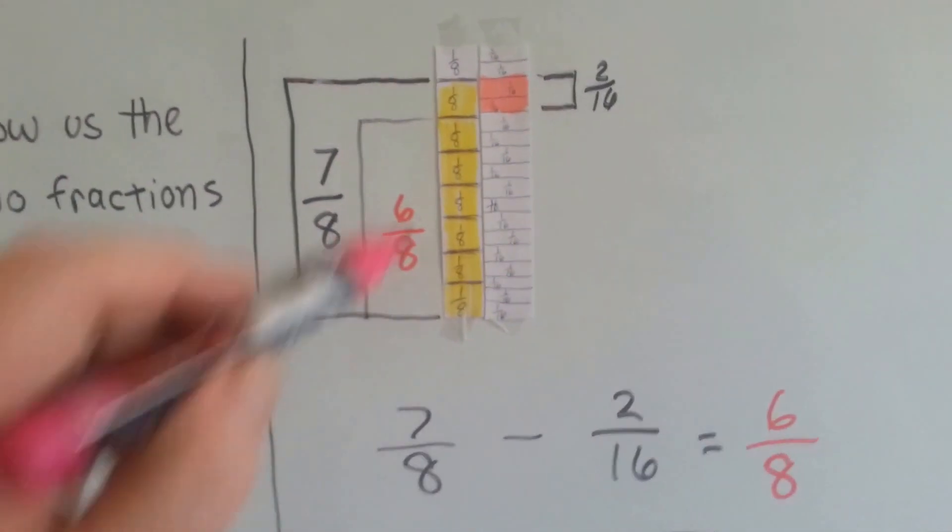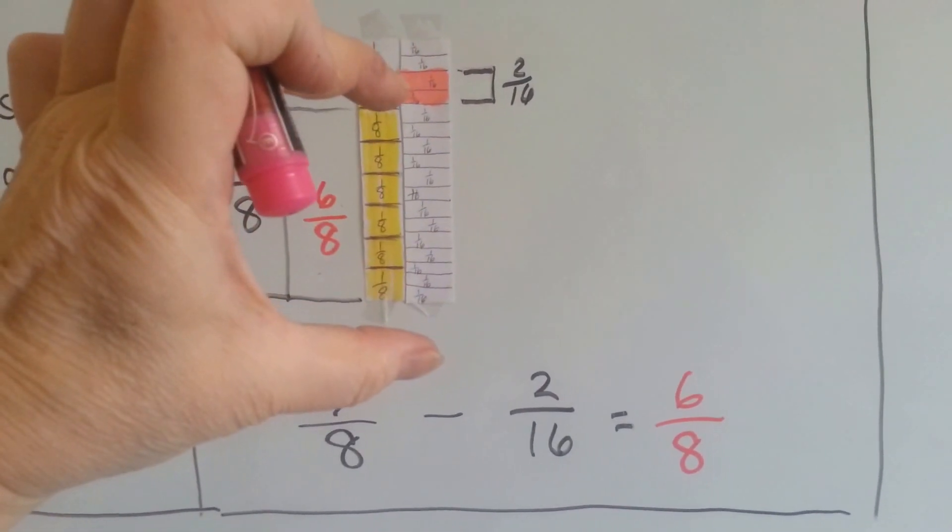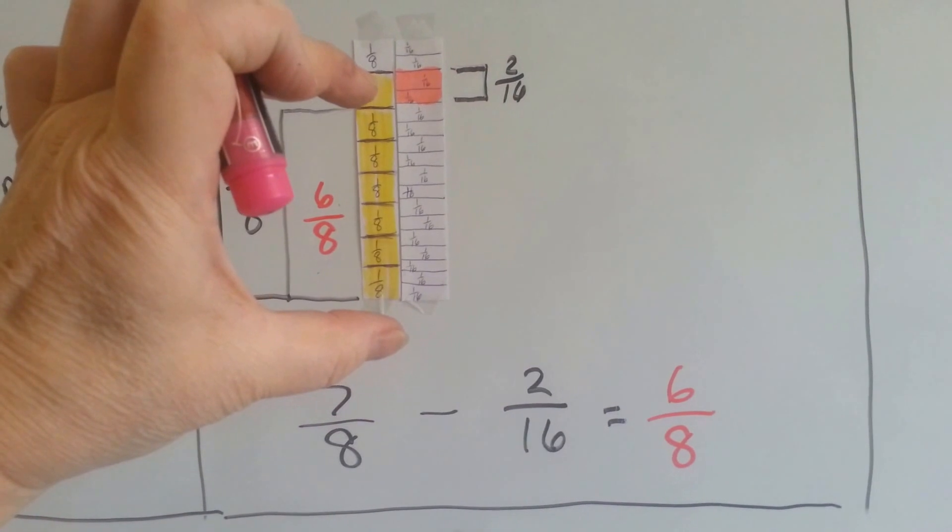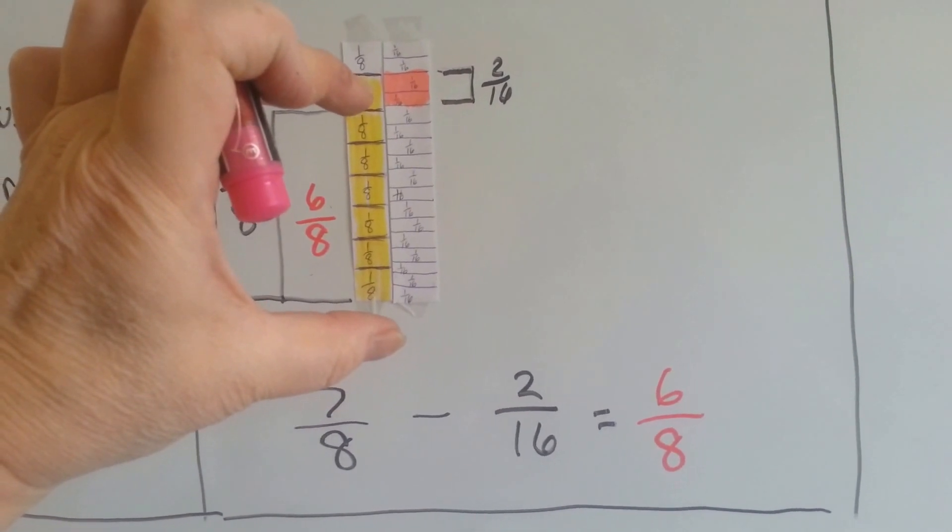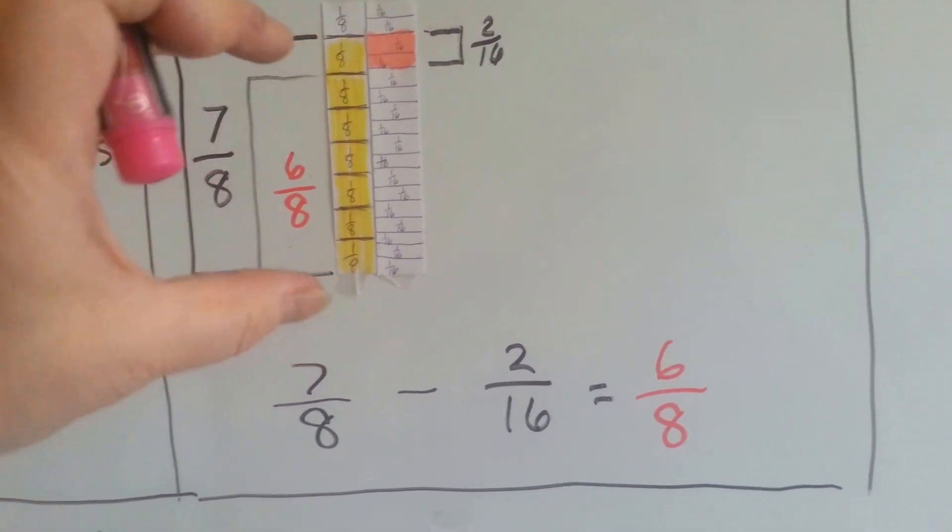In this one, we have 7 eighths and we're going to take away 2 sixteenths. And we can see that the difference is going to be 6 eighths or it's going to be 12 sixteenths. See? It shows us the difference.